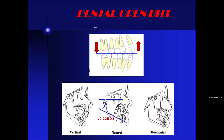There are three types of growth patterns: average or neutral (normal), vertical, and horizontal. In normal growth pattern, the FMA angle is 25 degrees. FMA angle is formed between the Frankfurt horizontal plane and the mandibular plane. If this angle is more than 25 degrees, it is known as vertical growth pattern. If this angle is less than 25 degrees, it is known as horizontal growth pattern.